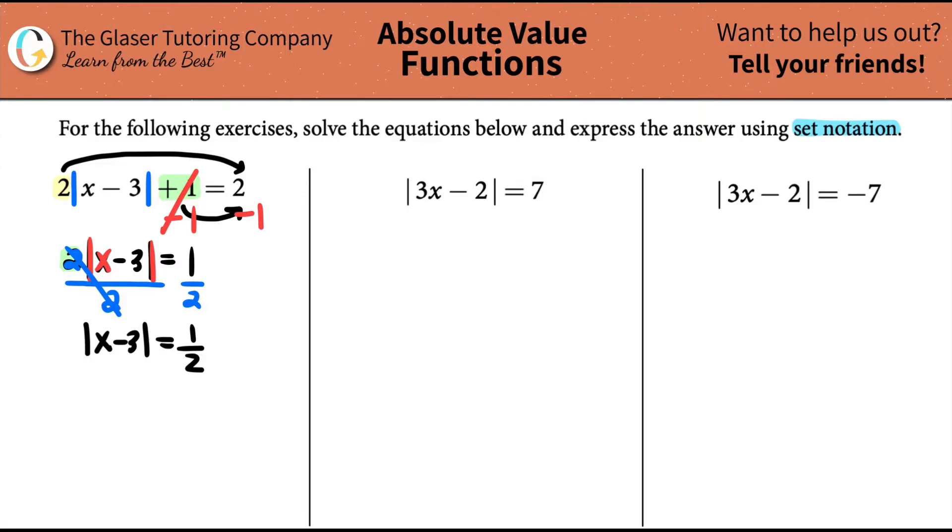Now we can do the division because the 2 is being multiplied by the whole thing on the left side. So I can divide by 2 on both sides. That gets rid of the 2. So now I have the absolute value of x minus 3 equals 1/2. Now how am I going to get this x out of this absolute value? I can't do anything because both the x and the 3 are trapped inside of the absolute value.